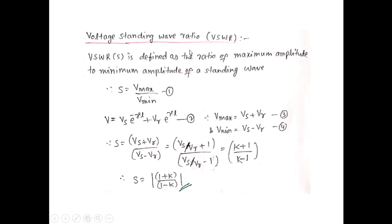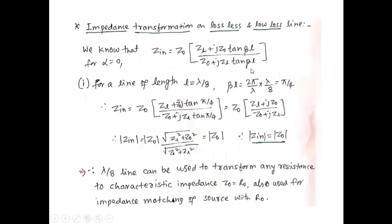The Voltage Standing Wave Ratio (VSWR) is defined as the ratio of maximum amplitude to minimum amplitude of a standing wave: S = Vmax/Vmin. Since Vmax = |Vs| + |Vr| and Vmin = |Vs| − |Vr|, we get S = (|Vs| + |Vr|)/(|Vs| − |Vr|) = (1 + |K|)/(1 − |K|).